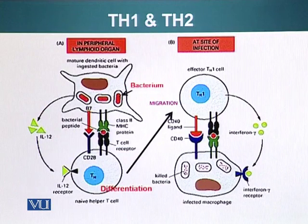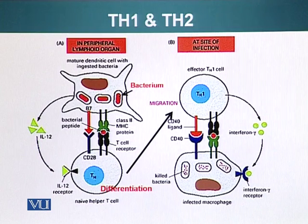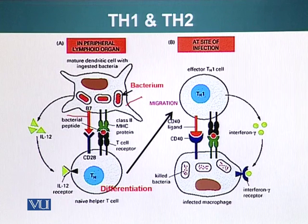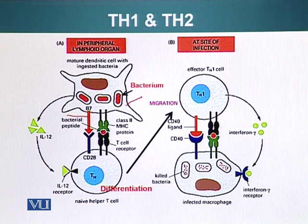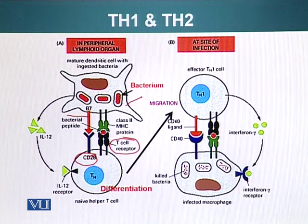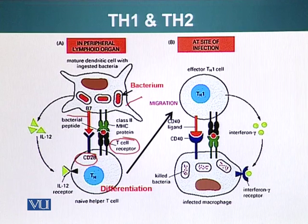Let's look at these two different scenarios in more detail. First, let's see how helper T cell type 1 functions. It is activated by the antigen presenting cell — the dendritic cell — which is displaying B7 molecules since it is mature. This is the second signal. The first signal is through the class 2 MHC protein in association with the foreign peptides signaling the T cell receptor. This will activate the helper T cell, and the lineage is guided by production of interleukin-12 by the dendritic cell, causing this naive helper T cell to become an effector helper T cell type 1.